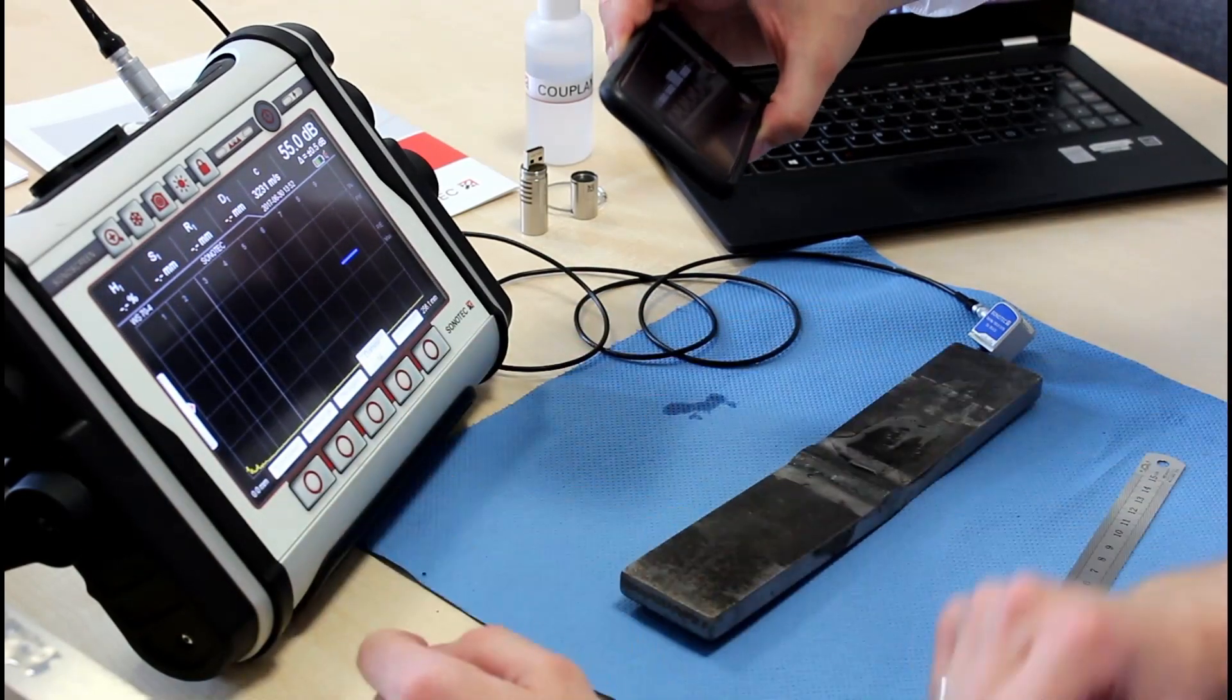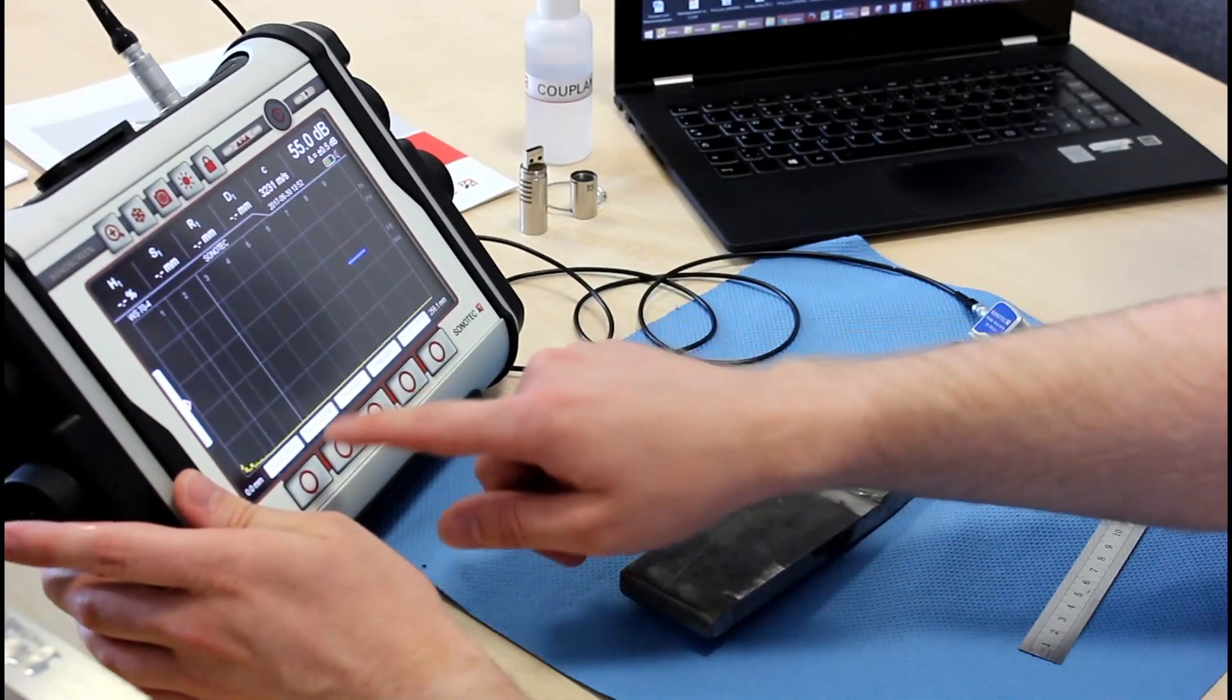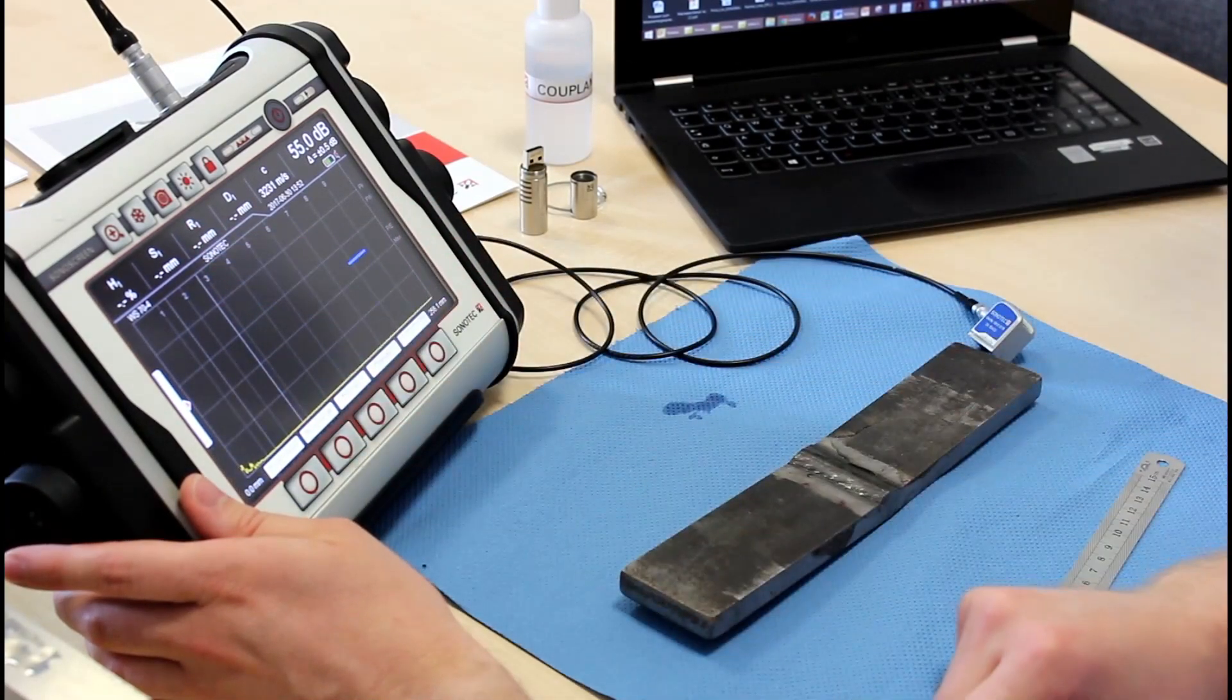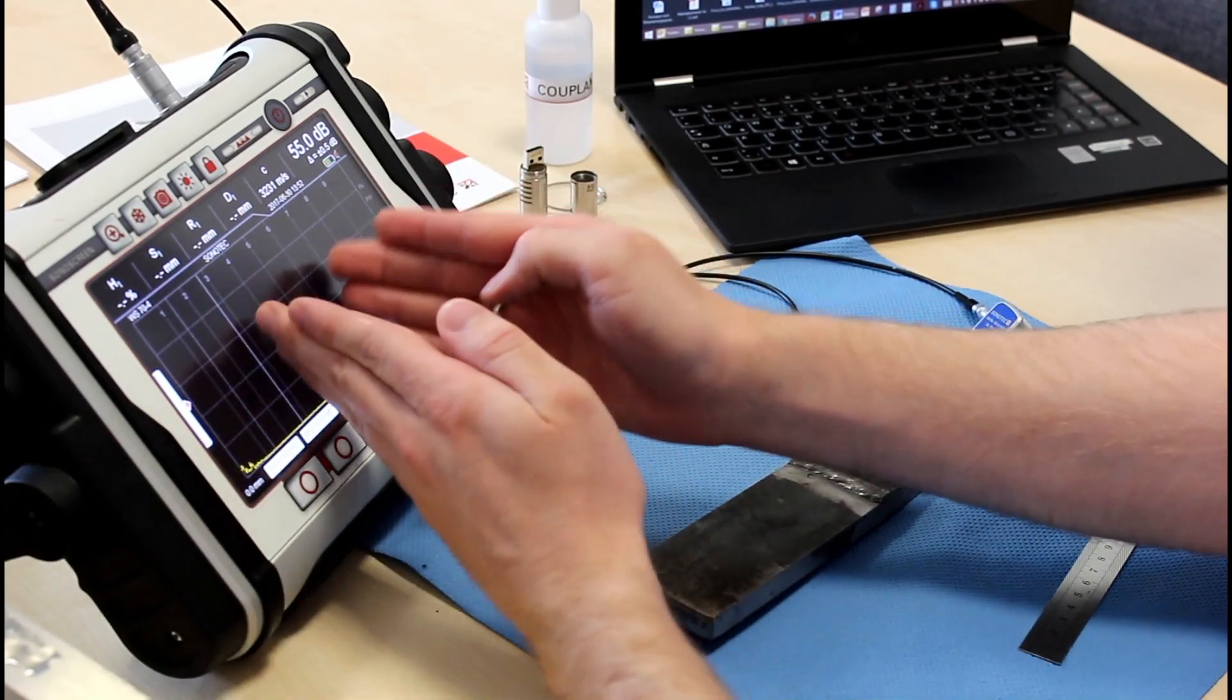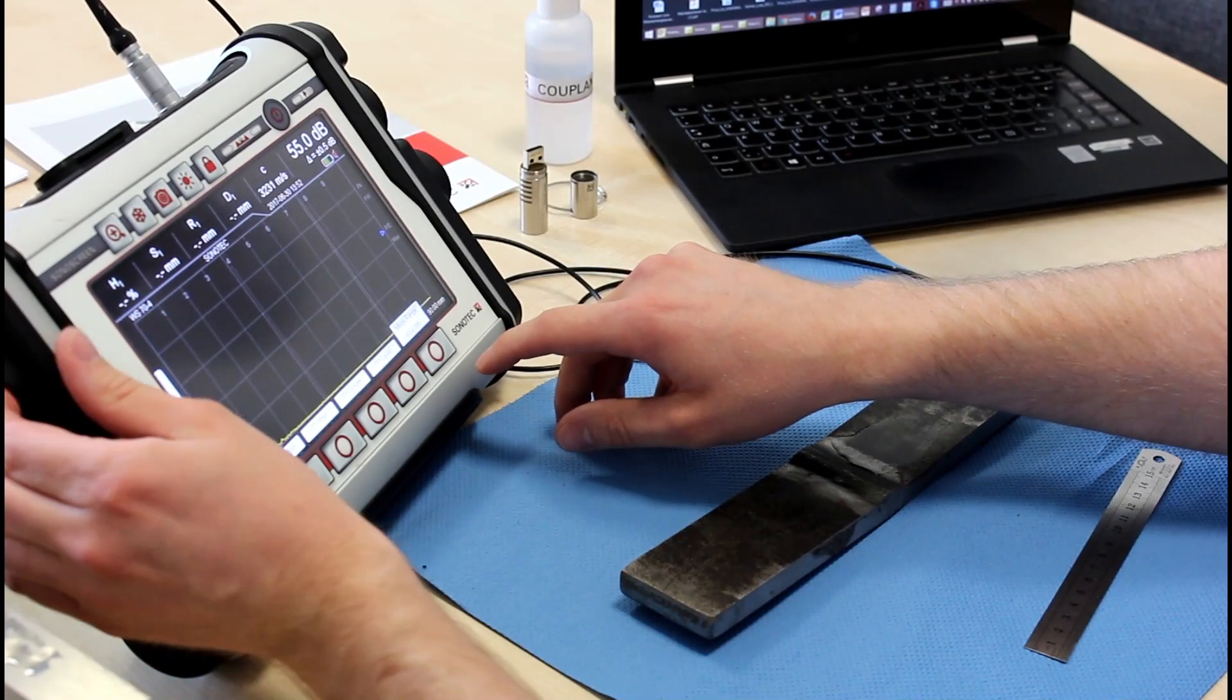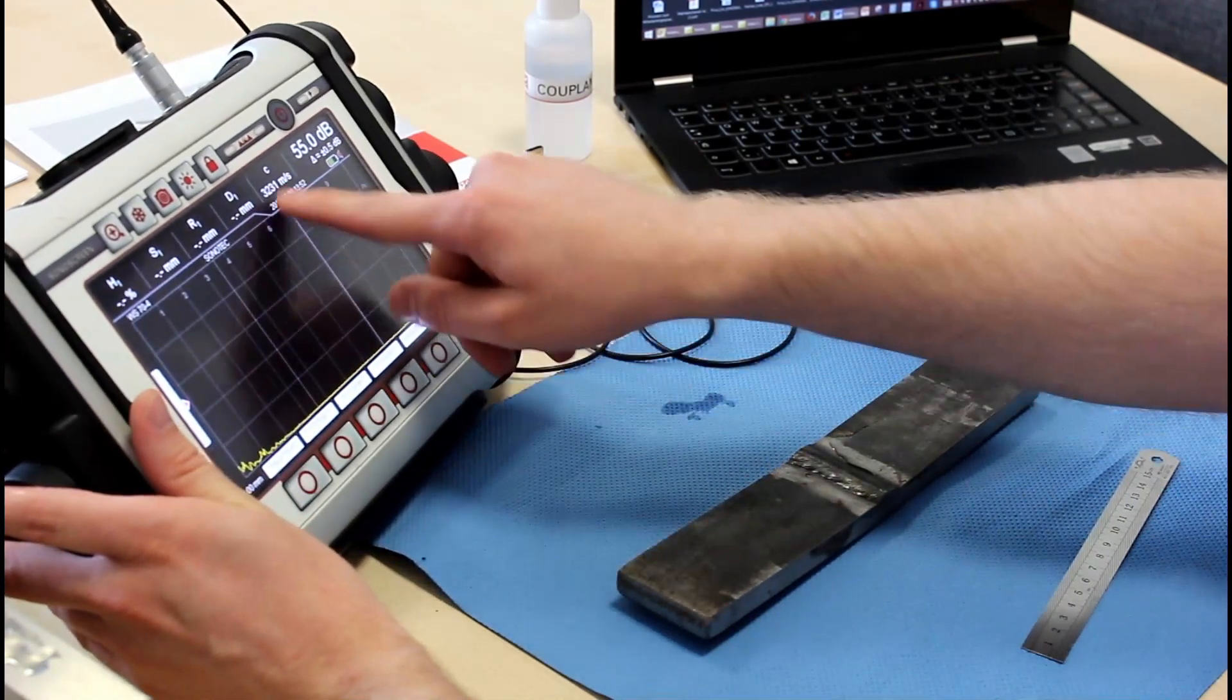Now we want to shorten our range. So we are going to try to center these two lines, which is the half skip and the full skip, as we are looking for flaws right between these two lines. Put the gate right in there. And we can start testing. Use a bit more couplant.